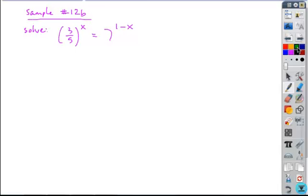If we take a look at this process, you first look to rewrite the exponents using the same base. Can that be done? No. If not, you go ahead and take either the common or natural log of both sides. I'm going to stick with the natural log of 3 fifths to the x is equal to the natural log of 7 to the 1 minus x.